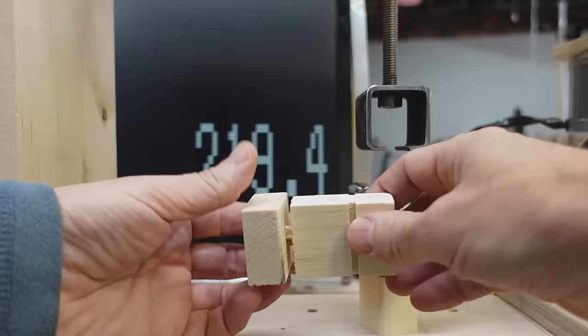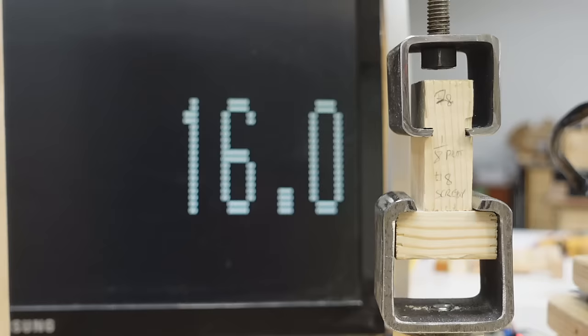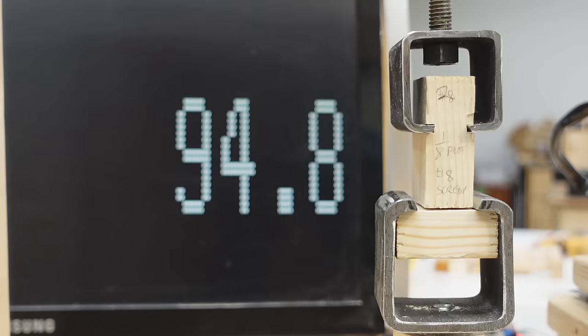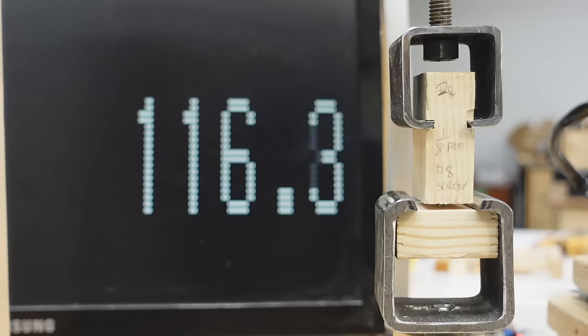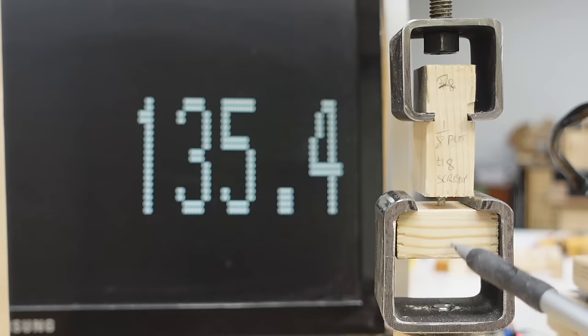Next test piece held together by a number 8 screw. I can see this is starting to open up, but it hasn't failed yet. Okay, still holding, but that gap is not very nice looking. Looking at this, it appears that the screw head is just sinking into this piece of wood.